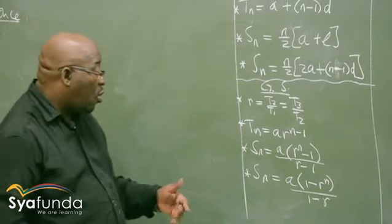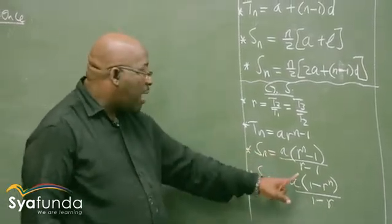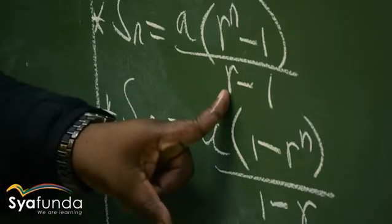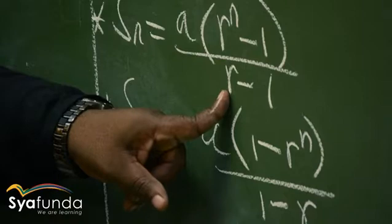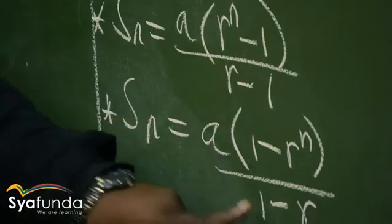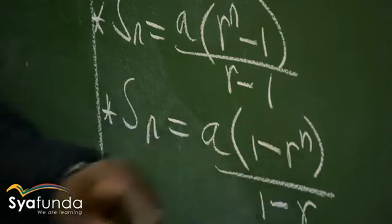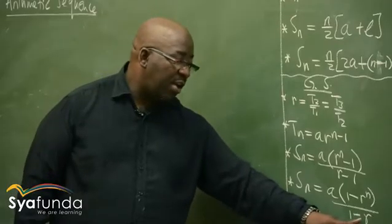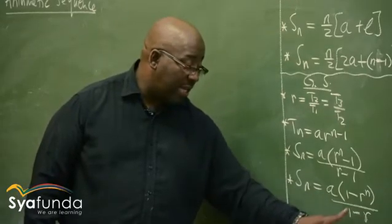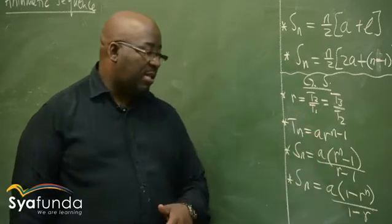So which one do we use? You check your denominator. If the common ratio is greater than 1, we use the first formula. If the common ratio is another value, we use the second formula.